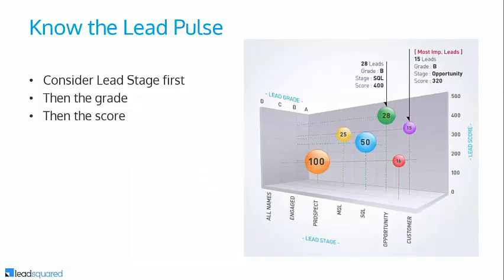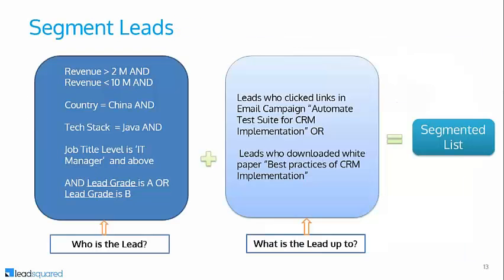Once you understand lead score, grade, and stage, you can really get a sense of the lead — we call that lead pulse. The most important dimension is stage, because the deeper the lead is in the sales stage, the more important it is. A lead which is an opportunity is more important than one in the prospect stage. Then the quality of the lead — what is the grade — and then the score. Leads deeper in stage with better grade can then be differentiated by score; the highest score means they are most engaged with your product or service.